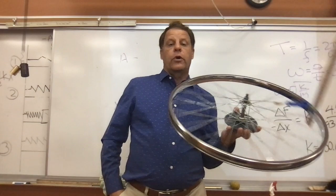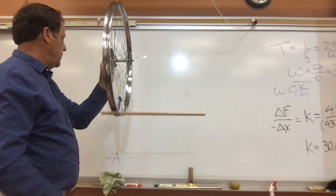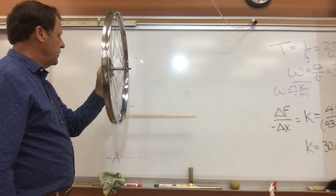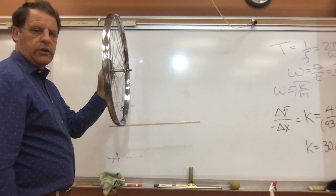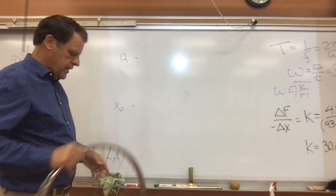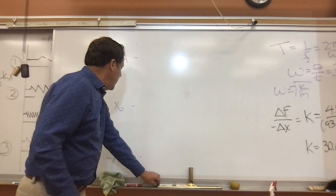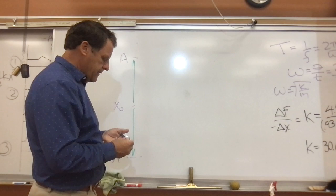What we're going to do here is with the projector shining, we're going to take a look at the shadow and line this up. We can see the shadow going between here and here, and the middle point is the equilibrium point. So now we're going from positive A to negative A and back.